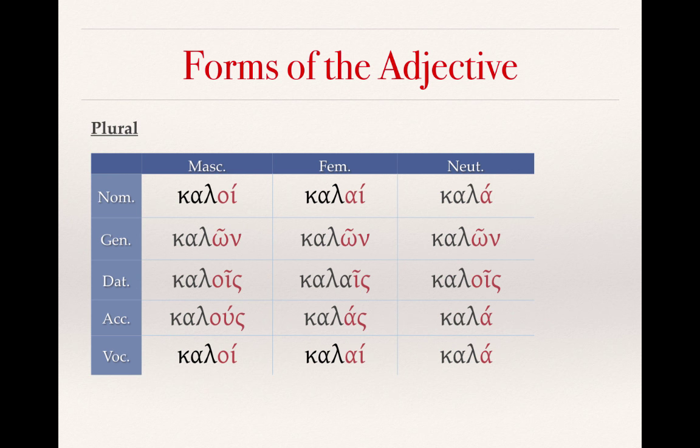Here is the plural form of the adjective for 'good' or 'beautiful.' It goes: kaloy, kalai, kalah; kalon, kalon, kalon; kalois, kalais, kalois; kalus, kalas, kalah; kaloi, kalai, kalah.